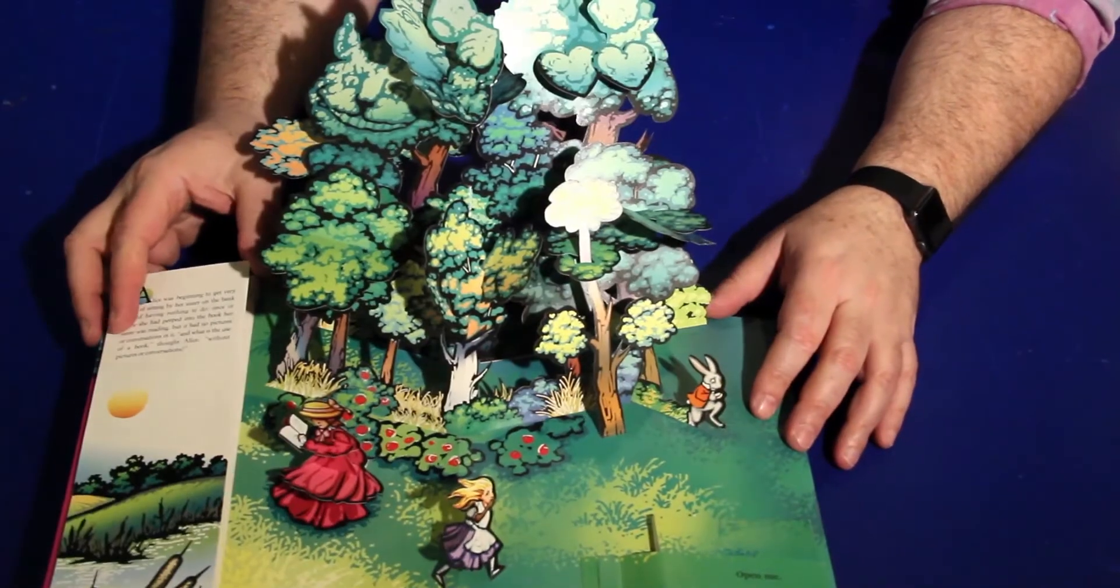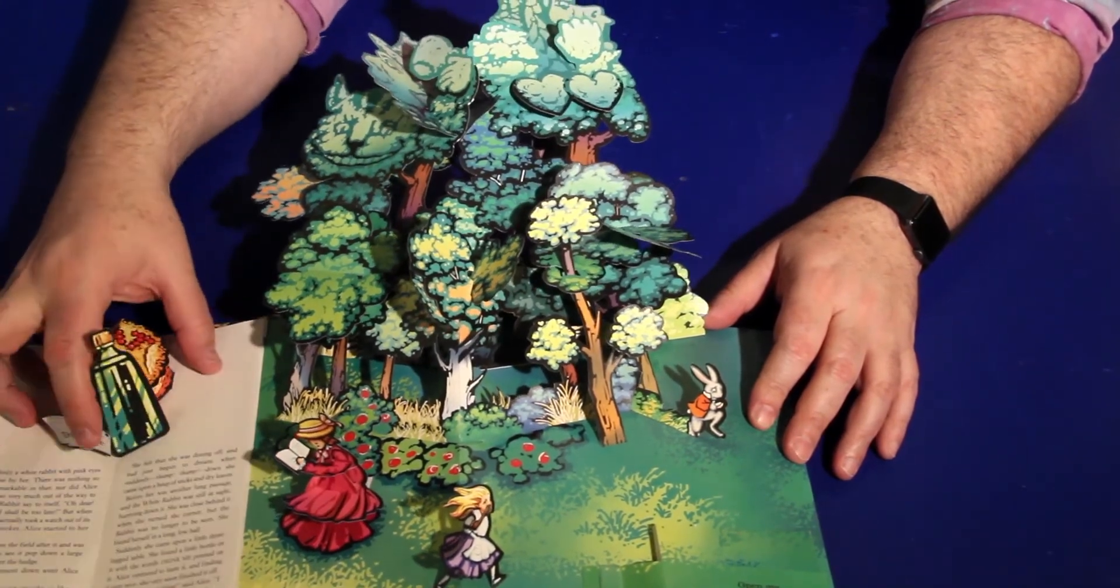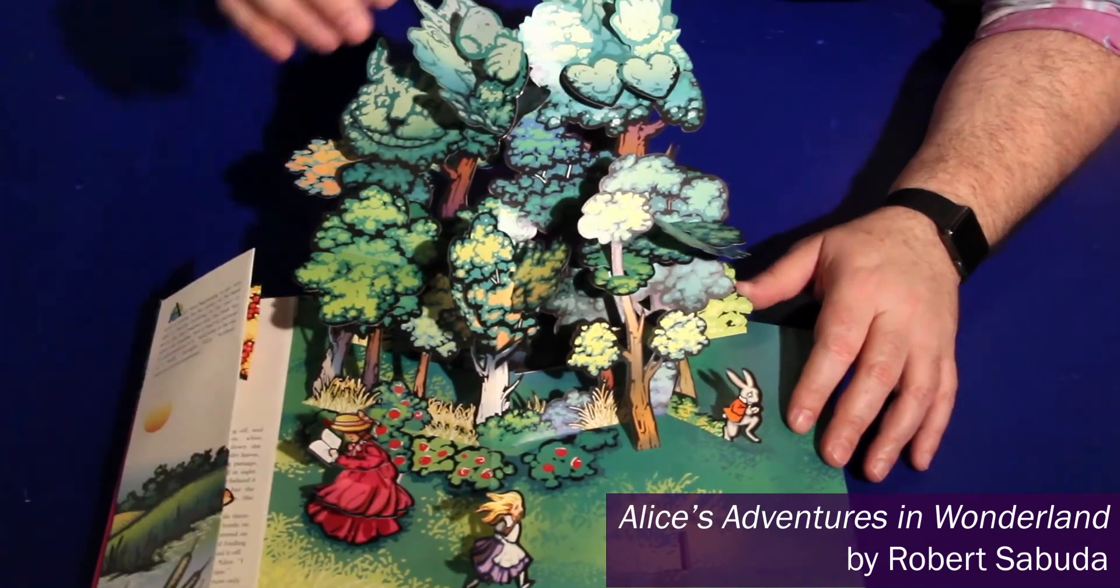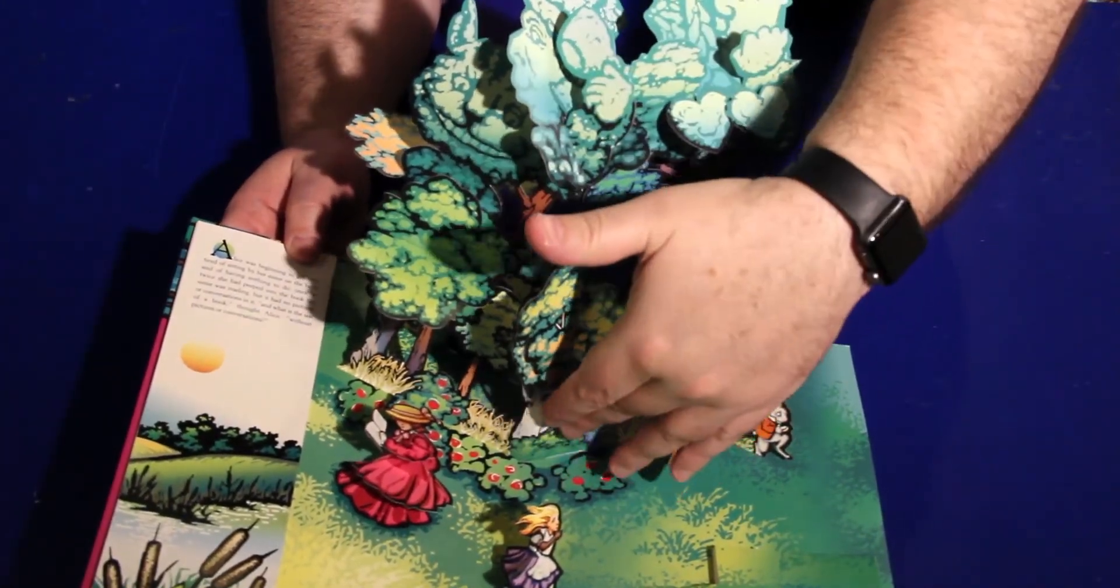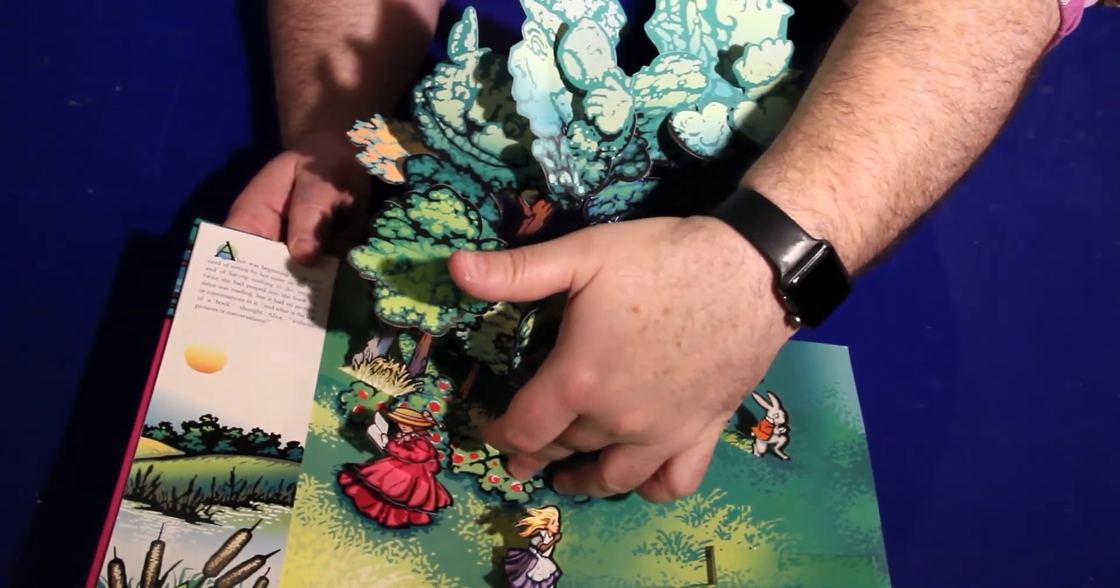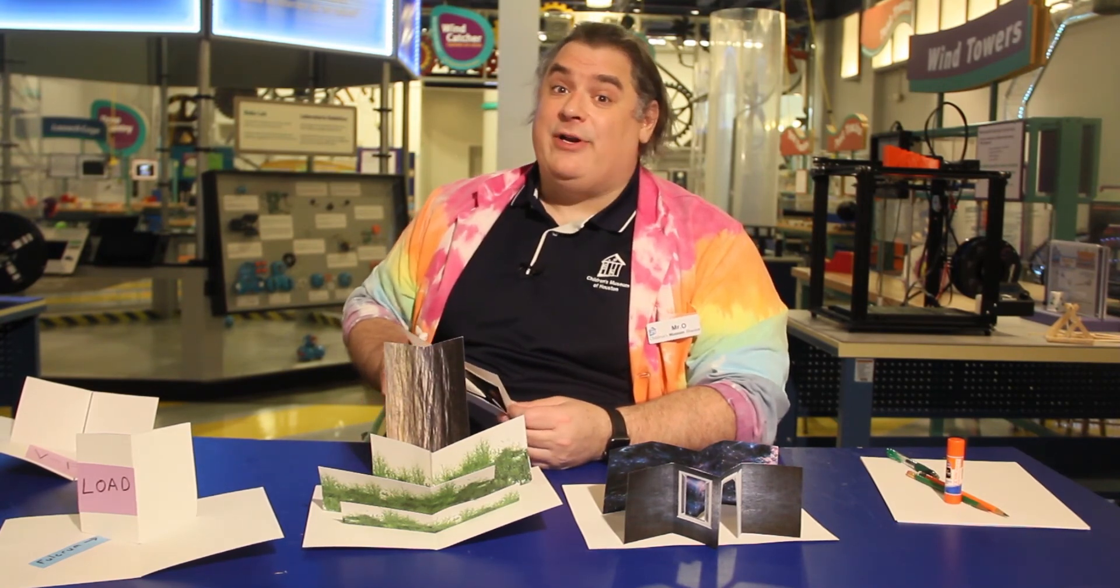One of the best ways to get ideas is to look at how other paper engineers have used V-Folds in their creations, like these from Alice's Adventures in Wonderland by Robert Sabuda. While some like this one are pretty obvious, some are hidden, like this one in the tree. Here's the crease on the fold so it opens up. The only limit to your paper engineering is your imagination and how much you want to make your projects pop.